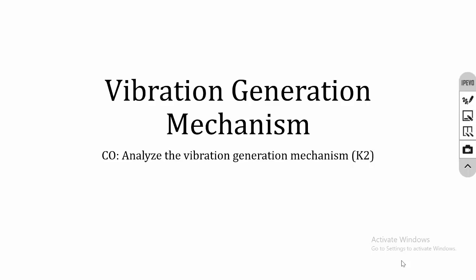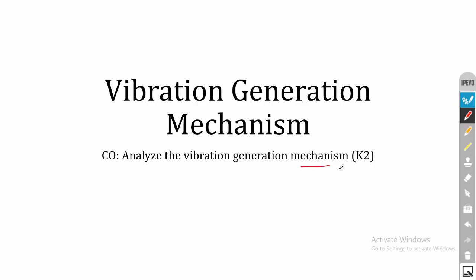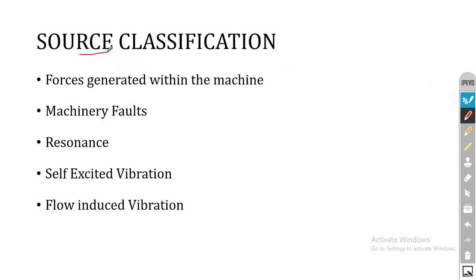In this lecture, I am going to start the second unit, that is vibration generation mechanism. The CO statement is to analyze the vibration generation mechanism. The first topic is source classification — what are the different sources of vibration? The first one is forces generated within the machine, then machinery fault, resonance, self-excited vibration, and the last one is flow-induced vibration. To control vibration in any system, we must have a clear idea about the sources and generation mechanisms of vibration.